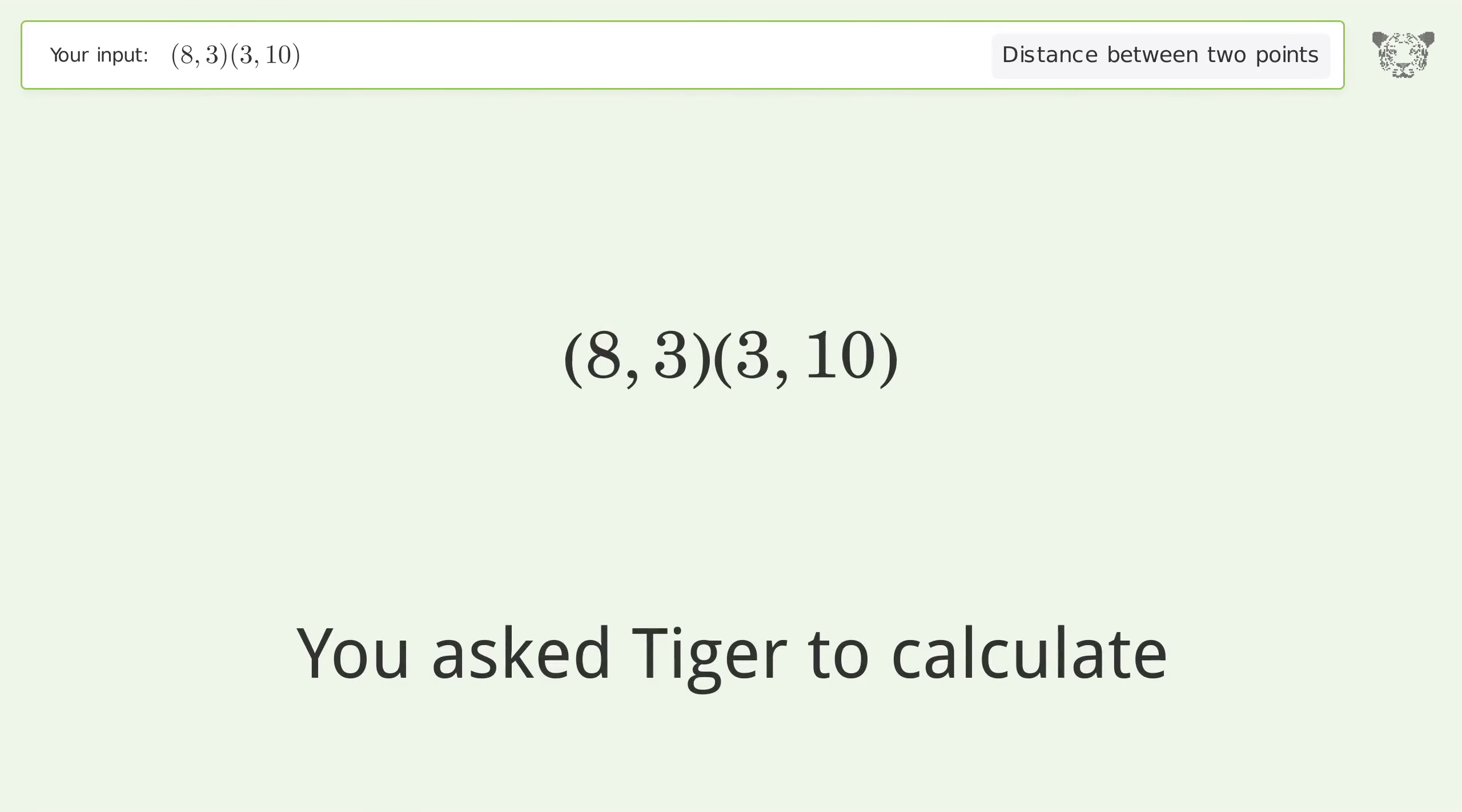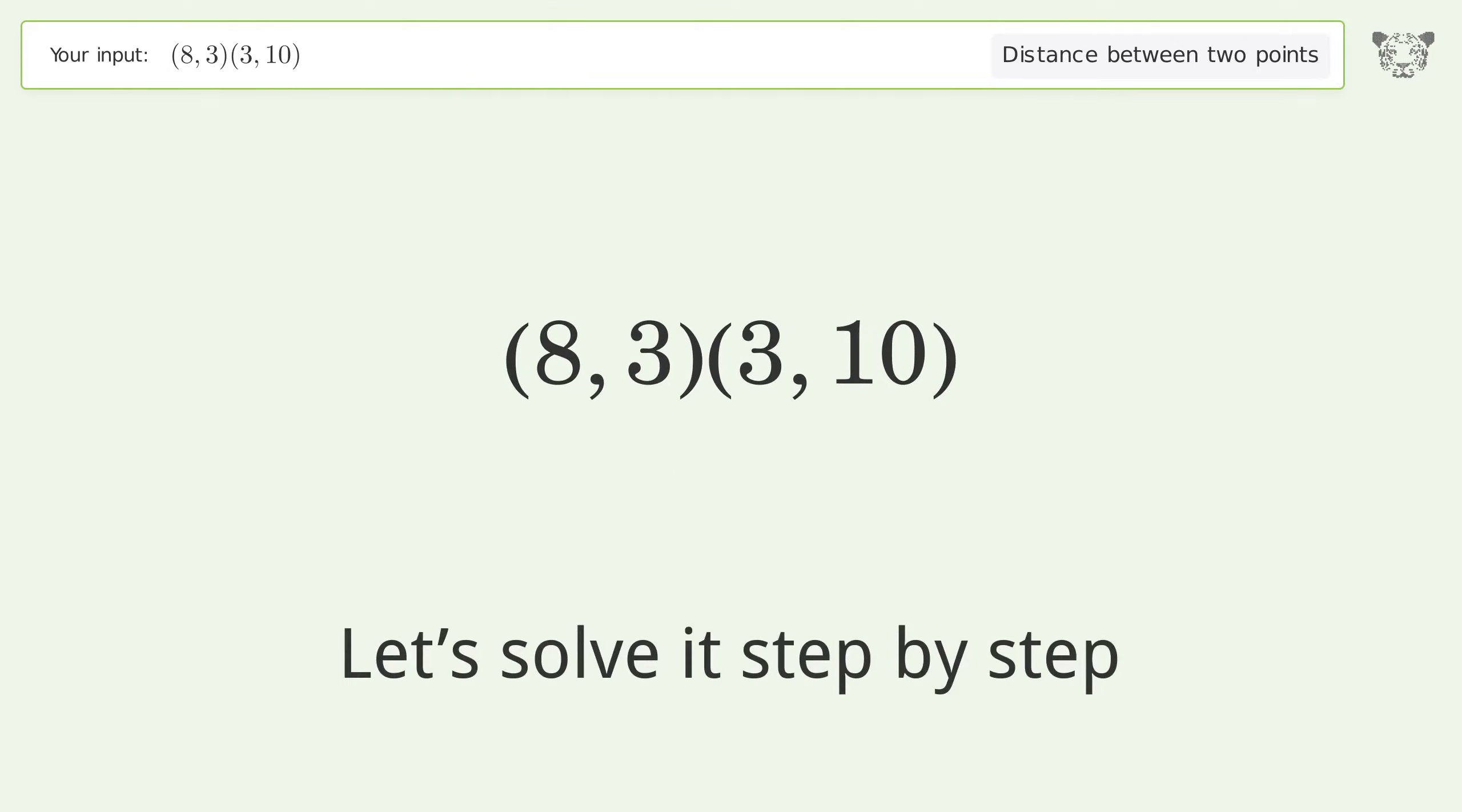You asked Tiger to calculate the distance between two points. The distance between the two points is the square root of 74, or 8.602. Let's solve it step by step.